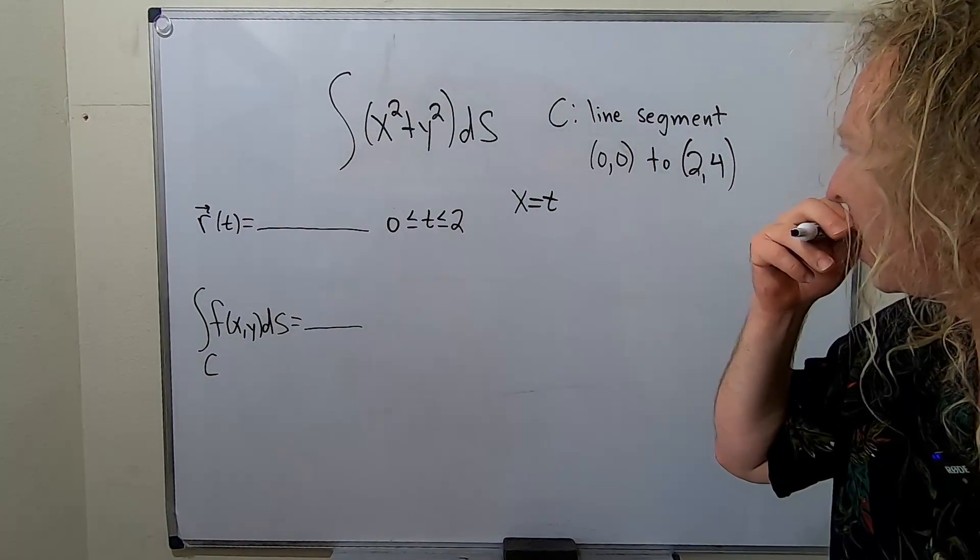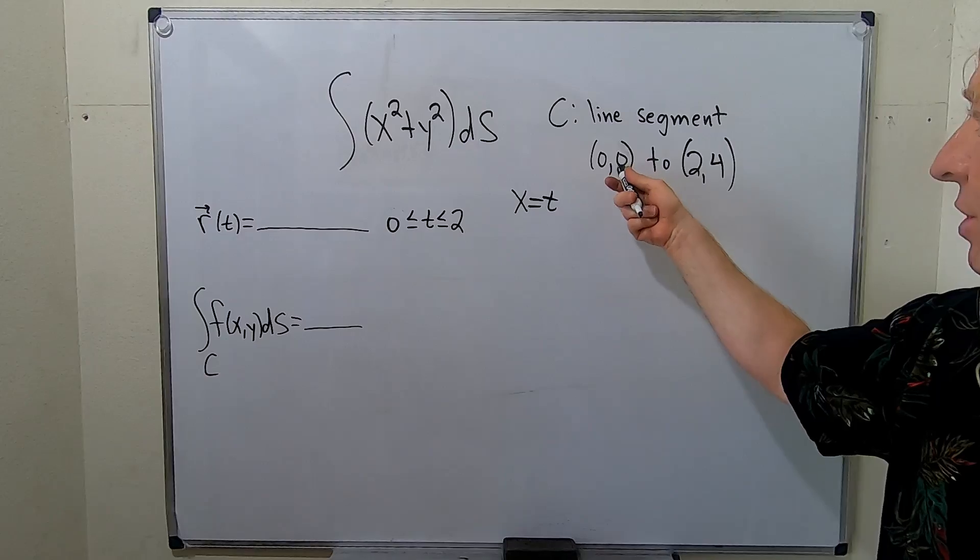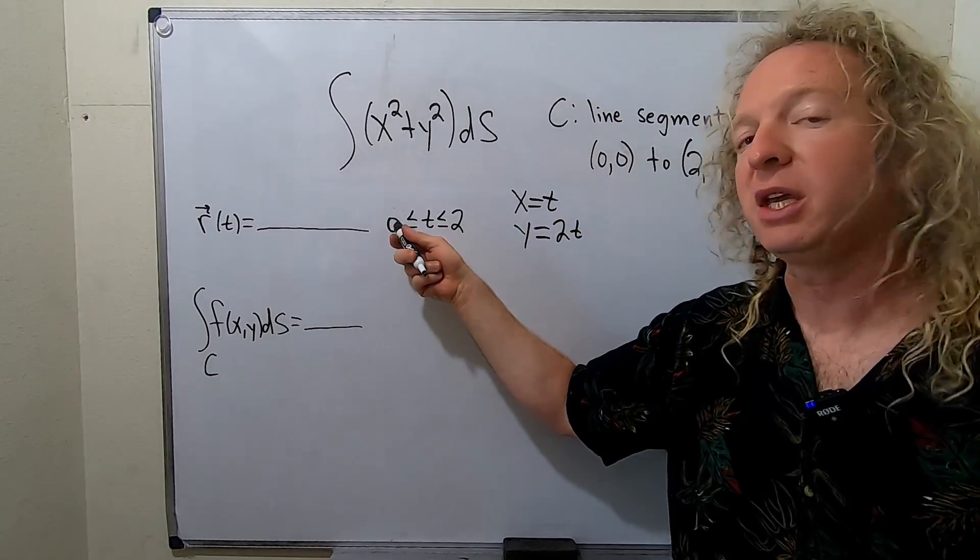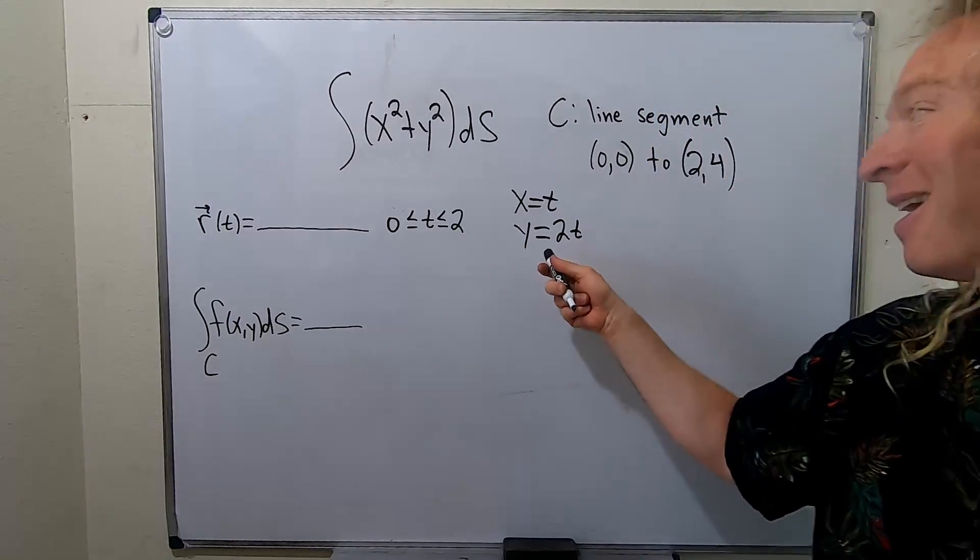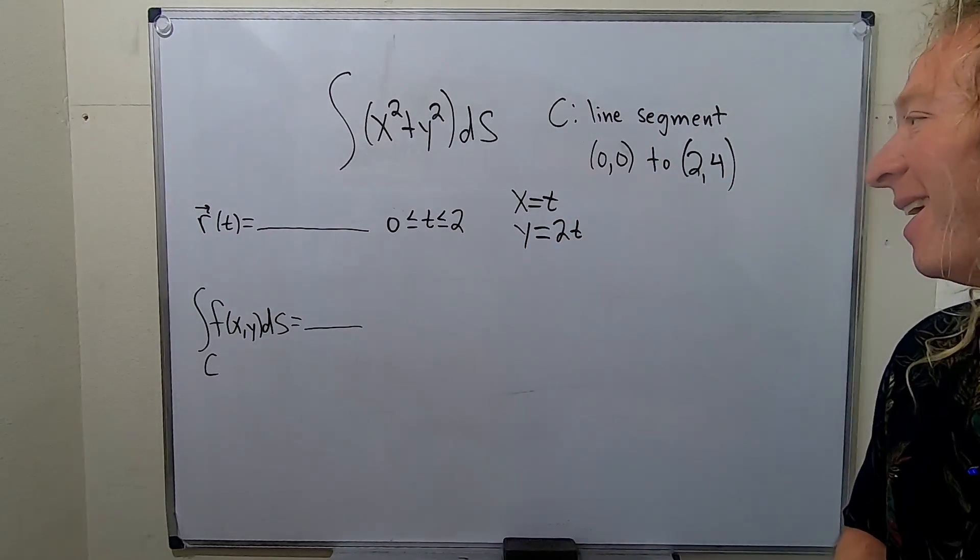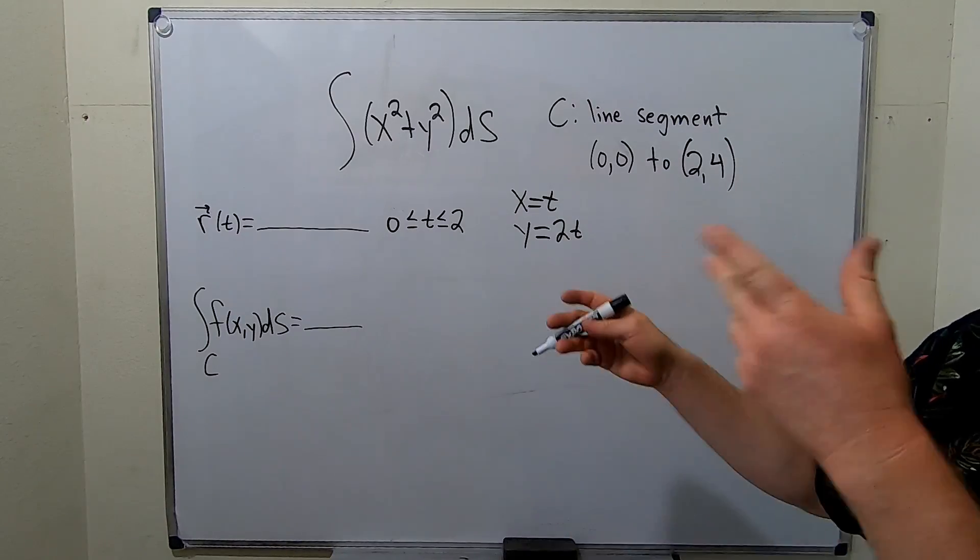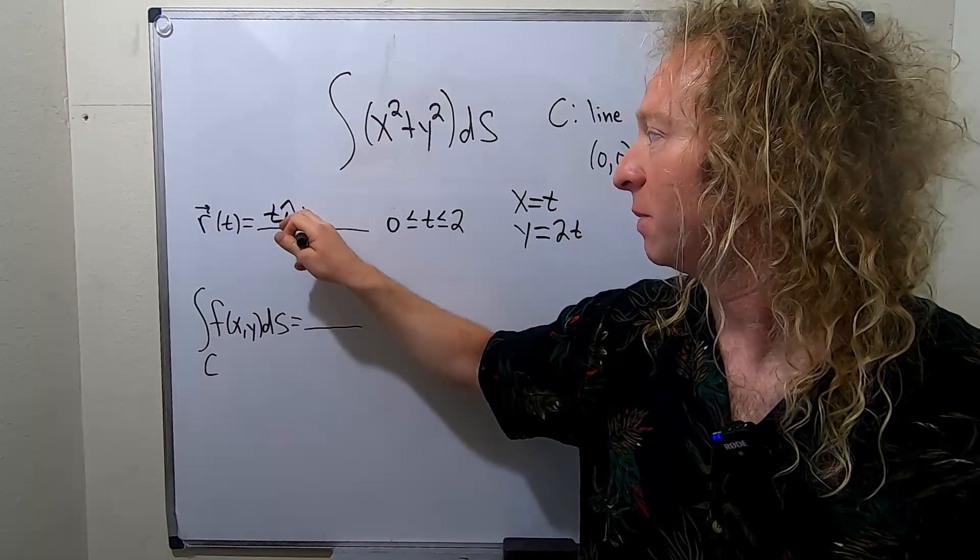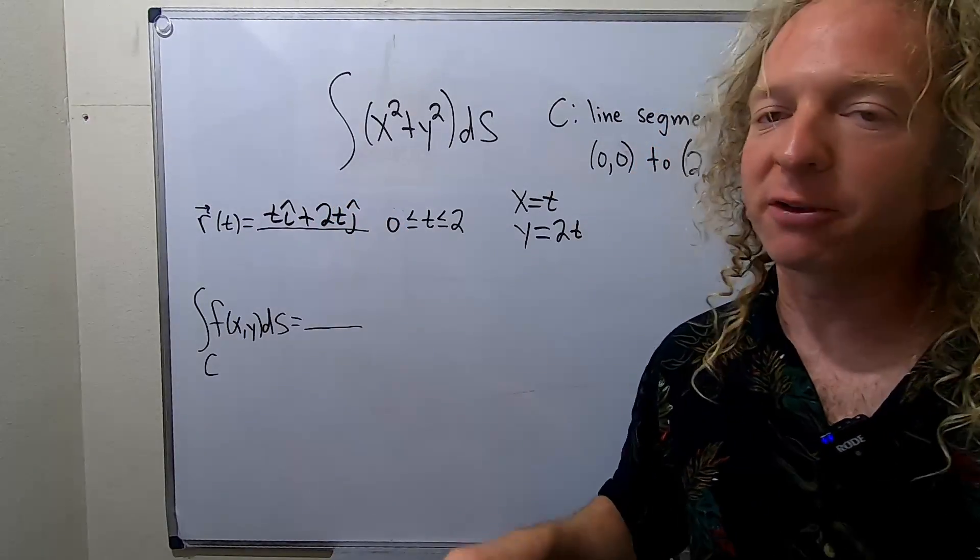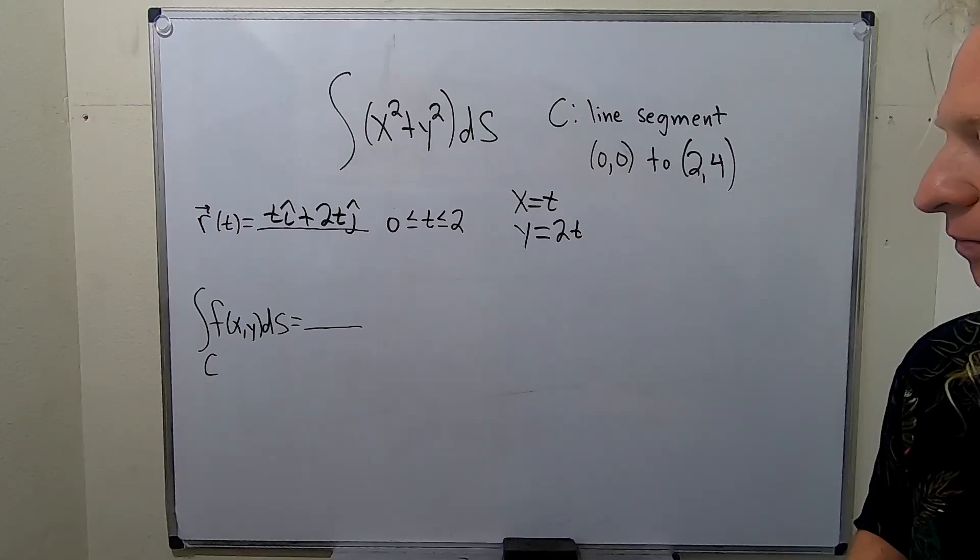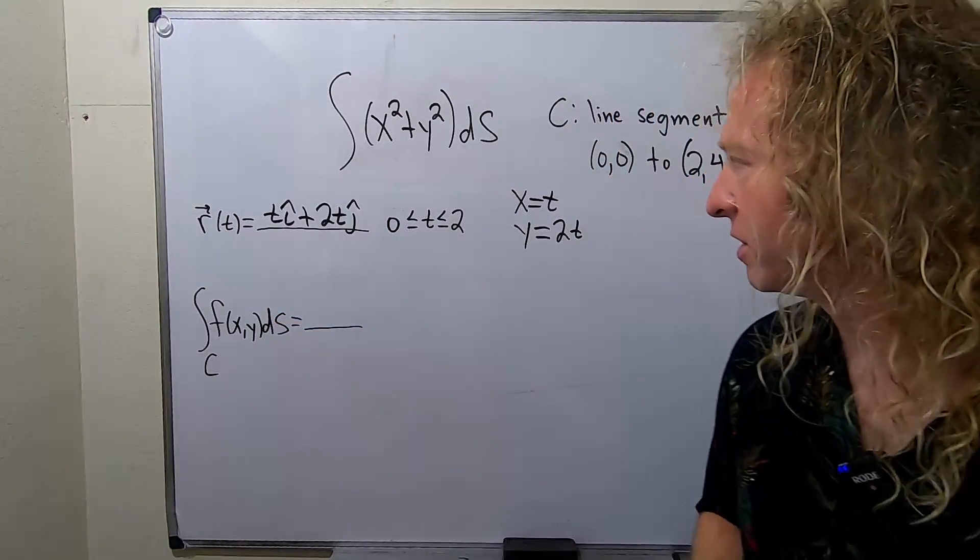And then what can we make y be? Well we want y to go from 0 to 4, so we can use 2t because if t goes from 0 to 2 then y goes from 0 to 4. I'm going to write the answer down here: ti hat plus 2t j hat. You can use component form as well; I decided to use the notation with i and j.